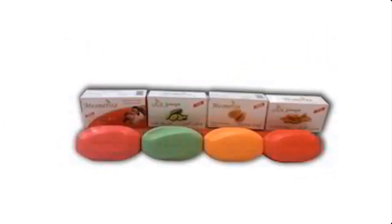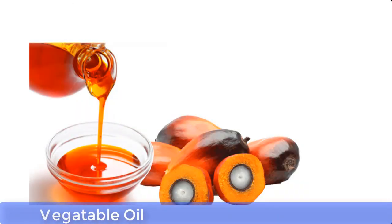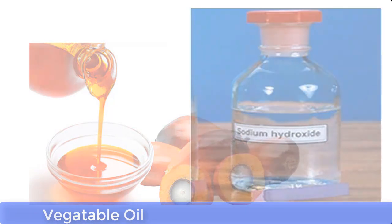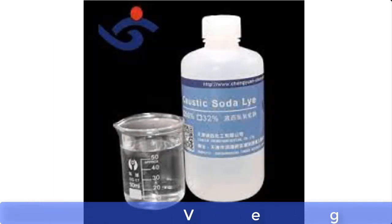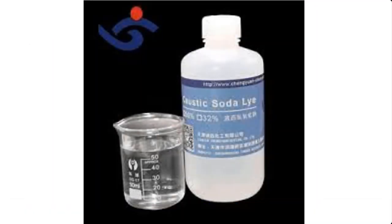Toilet soap or any other kind of solid soap is made from two very important materials: these are vegetable oil and lye. Now lye is a solution of caustic soda or caustic potash, but in this preparation we'll be using caustic soda.